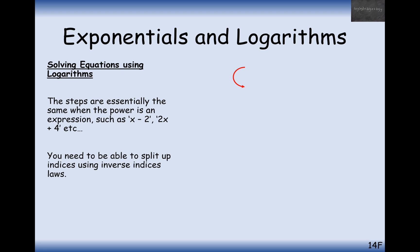Moving on to the next equation, we may have to split up an indice like this. So 7 to the power of x plus 1 equals 3 to the power of x plus 2. What we're going to do here is try to create the same power on both expressions. I used the law of indices to split up 3 to the power of x plus 2 into 3 to the 1 times 3 to the power of x plus 1. Then I divide by this index, so I get 7 to the power of x plus 1 divided by 3 to the power of x plus 1, and I'm left with the 3 on the right-hand side.